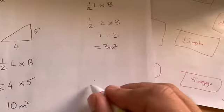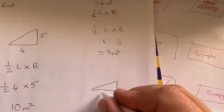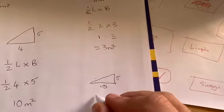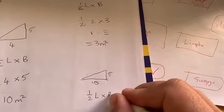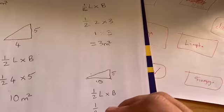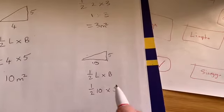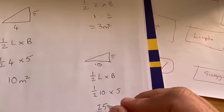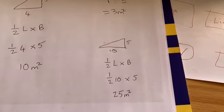Let's do one more before I switch off here. Let's say this one is, let's make it 10 by 5. So remember, half length times breadth. So that means you got half of 10 times by 5. Half of 10 is 5, and 5 times 5 is 25, so it's 25 meters squared.